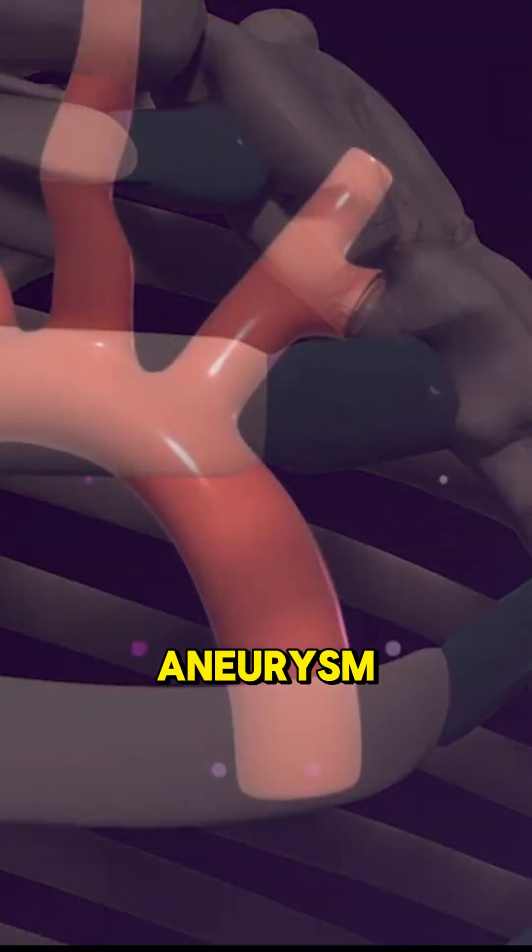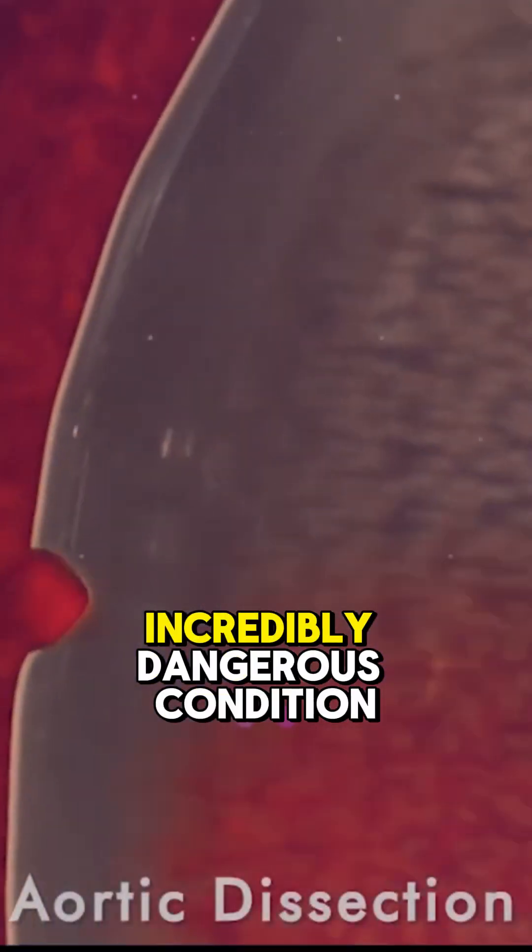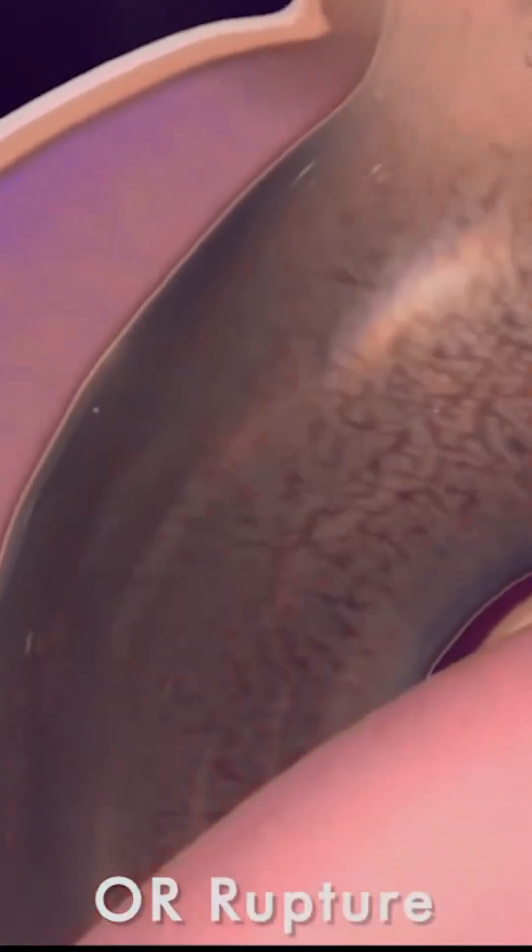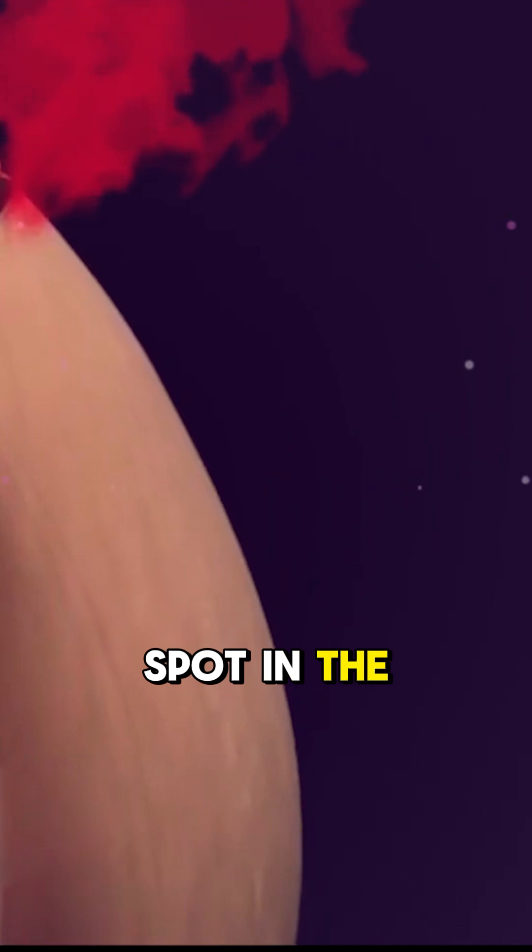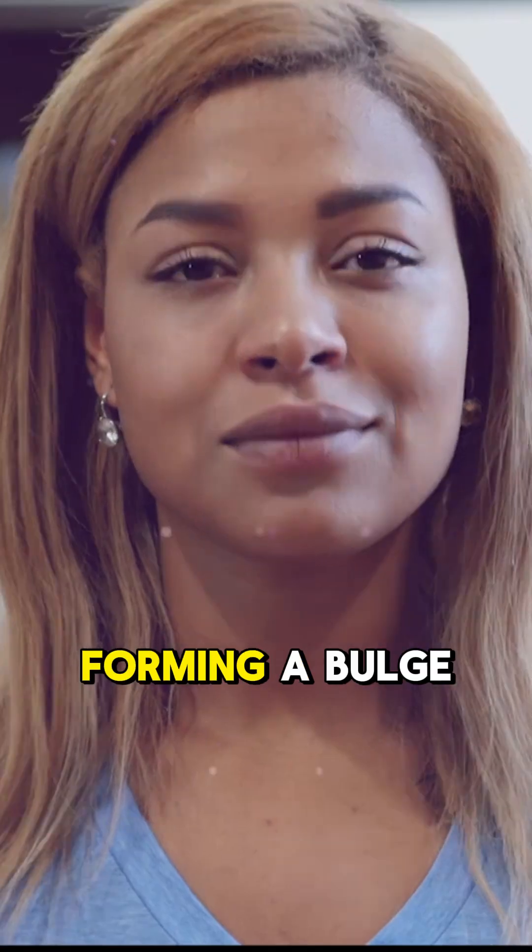That's an aortic aneurysm, a silent and incredibly dangerous condition. This happens when a weak spot in the artery wall gives way, forming a bulge.